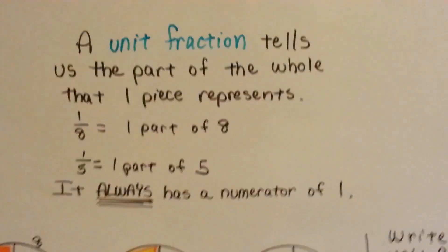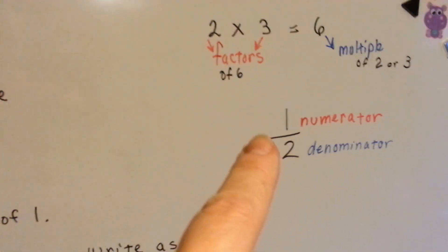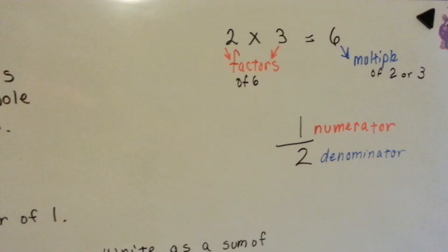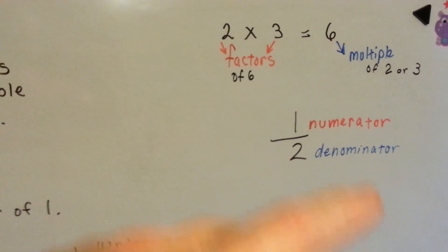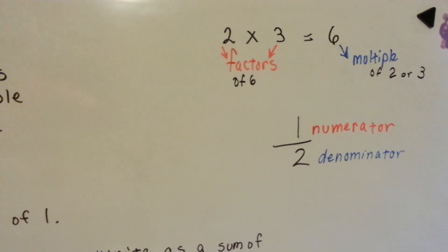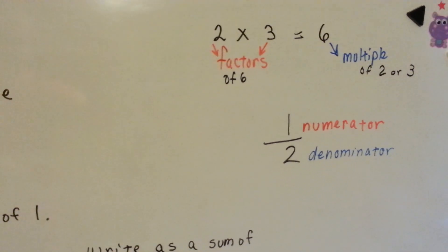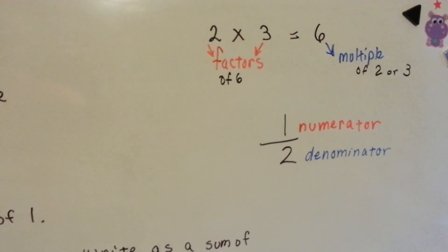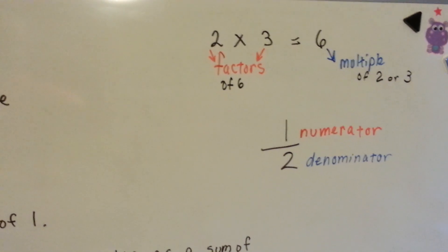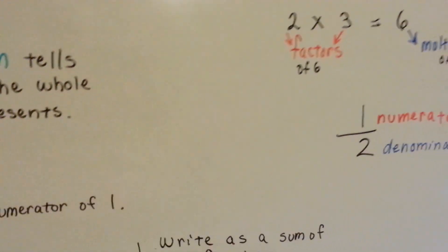Remember, the numerator is the top and the denominator is the bottom. If we discuss multiples, that is the answer in a multiplication problem. The multiples of 6 are 6, 12, 18, 24 — they're multiple 6's. It's very easy to remember that a multiple is a multiple amount of that thing. And the factors are what you multiply together to get the multiple.